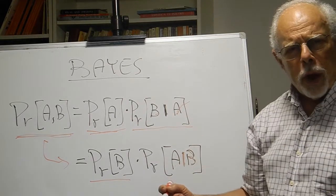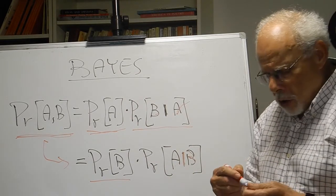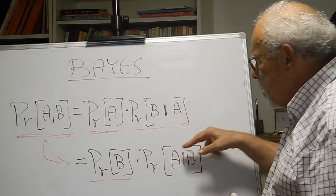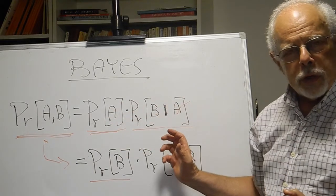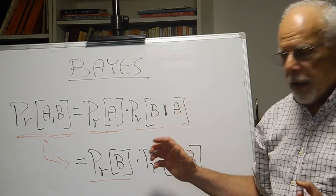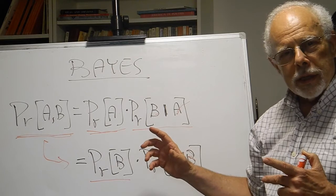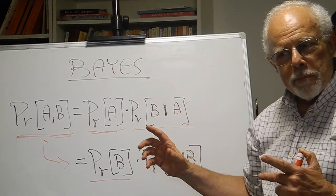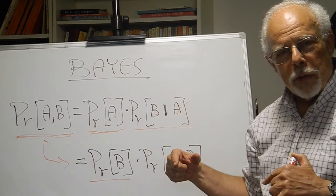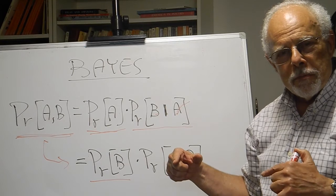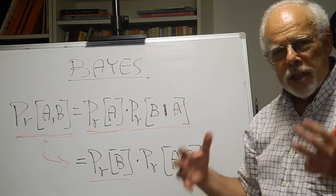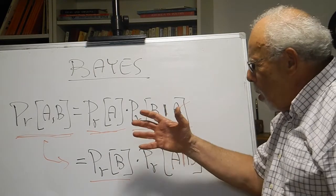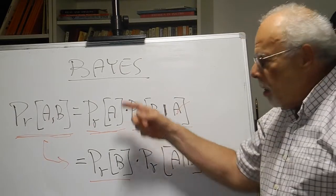And the reason that it's so powerful is that in so many real cases, we know three of those probabilities. And we can calculate the fourth. Powerful inference engines are based almost solely on this.